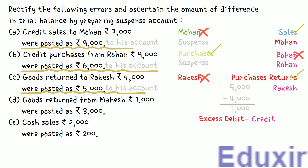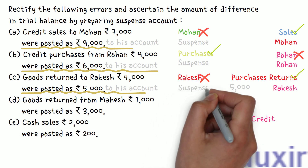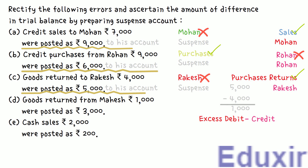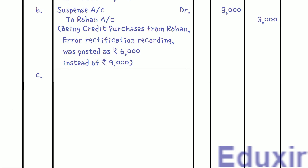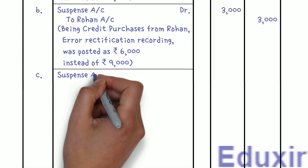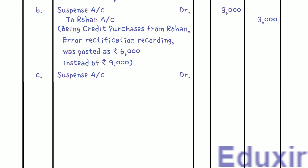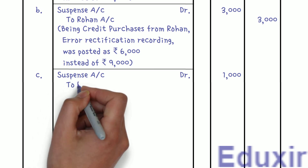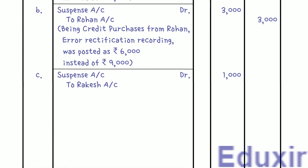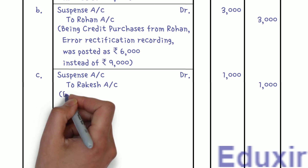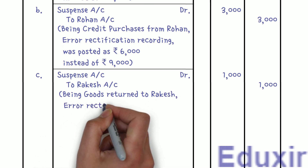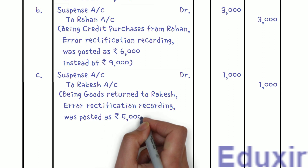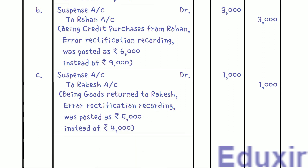Since there is an excess debit, we post the rectification entry on the other side — the credit side. So we credit Rakesh's account with 1,000 rupees. As this is a one-sided error, the suspense account is debited. Journal entry: Suspense Account Dr. 1,000 rupees; To Rakesh's Account 1,000 rupees. Narration: Being goods returned to Rakesh — error rectification recording — was posted as 5,000 rupees instead of 4,000 rupees.